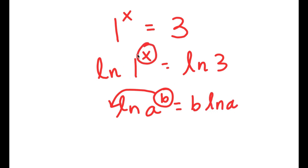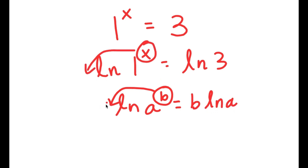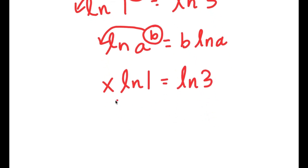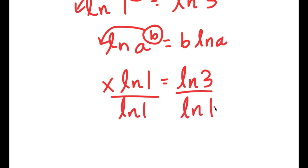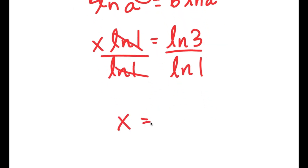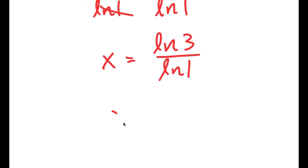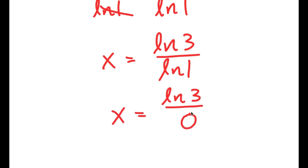In this case, I have ln 1 to the power of x, and I can move x to the front. So now I get x times ln 1 is equal to ln 3. And now if I divide both sides by ln 1, these two cancel out, and I get x is equal to ln 3 over ln 1. Now, ln 1 is equal to 0. So I get x is equal to ln 3 over 0, and you can't take any number and divide it by 0 because that's undefined, meaning this has no solution.